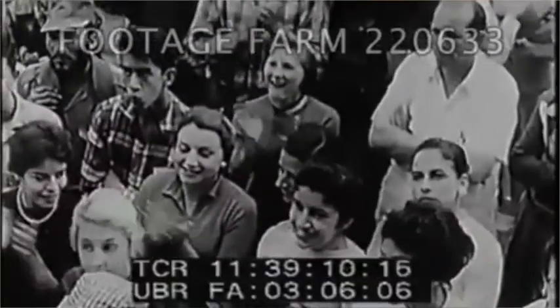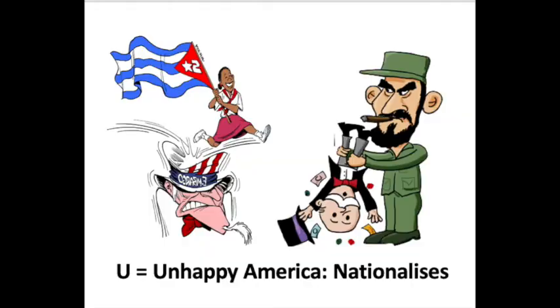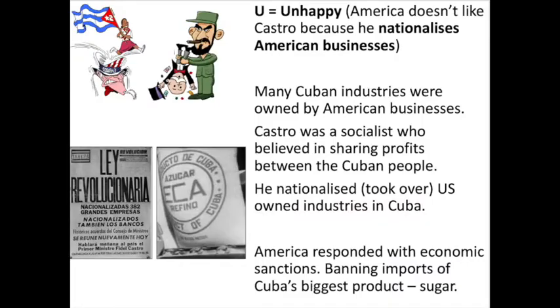Not all Cubans were thrilled that Castro had taken over, but for the most part he was pretty popular in 1959. U — unhappy America. What Castro does to make America unhappy is he nationalizes Cuban business, meaning the government takes over running those private American companies that had previously been running Cuban industries. This really upsets the American companies and government, and they put an embargo on Cuba — economic sanctions — refusing to buy Cuban products, particularly sugar, which is Cuba's biggest export. Those sanctions are actually still in place to this day.